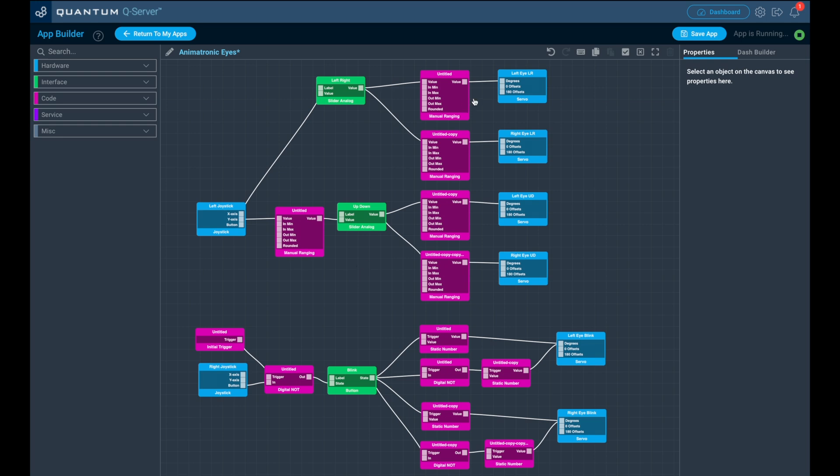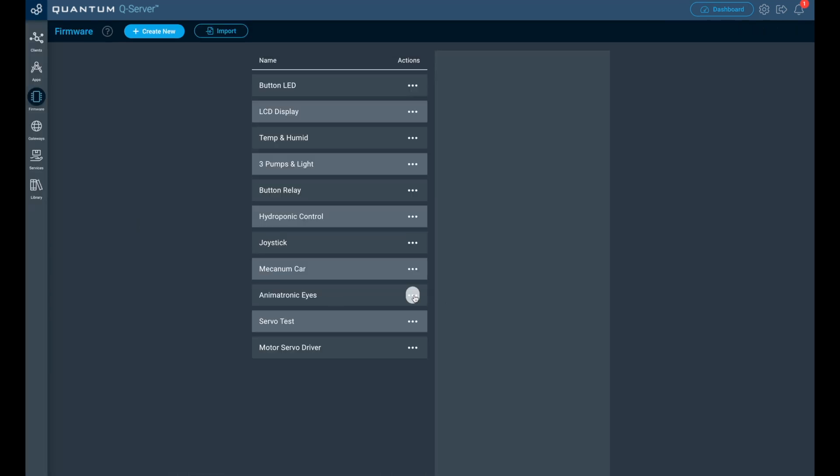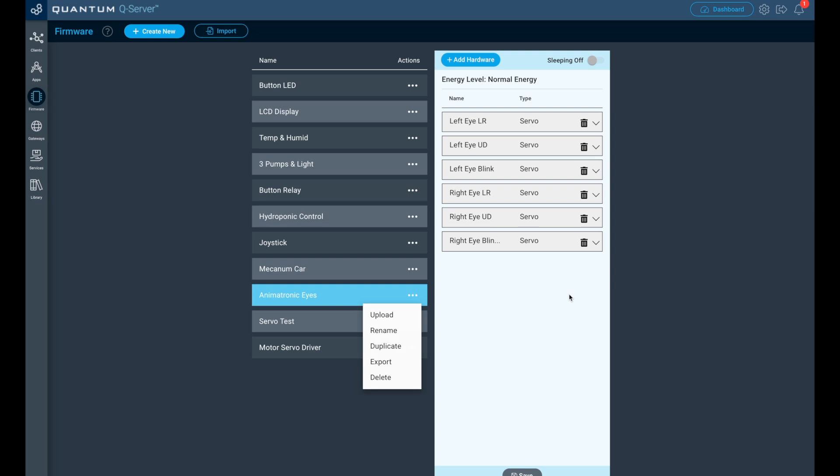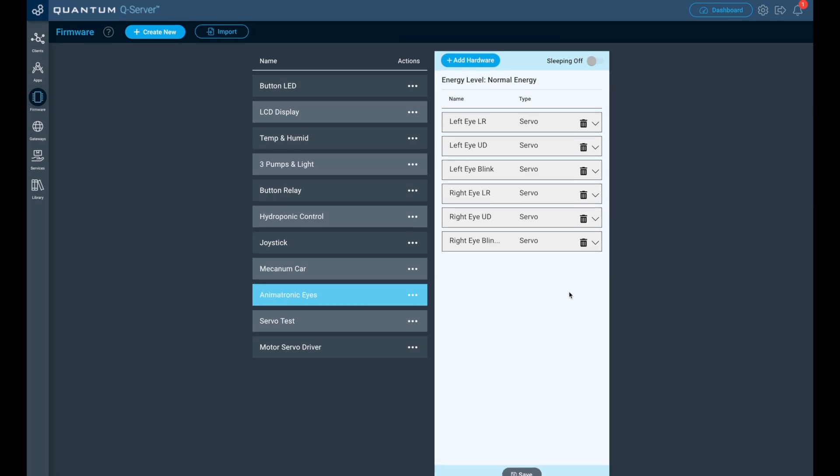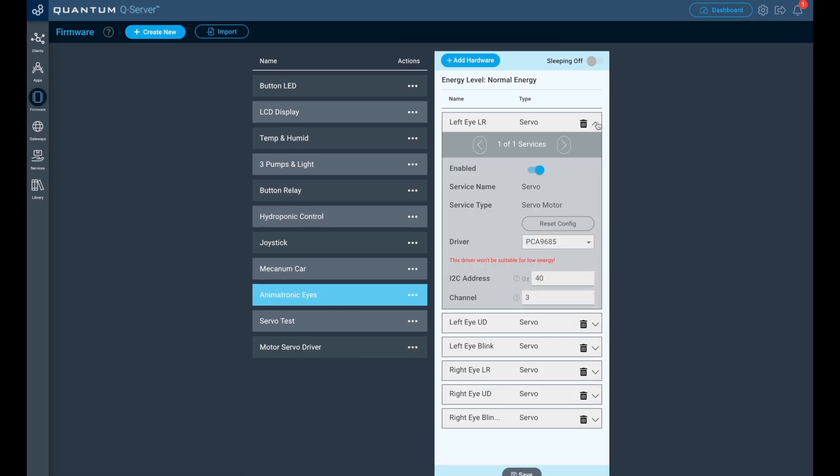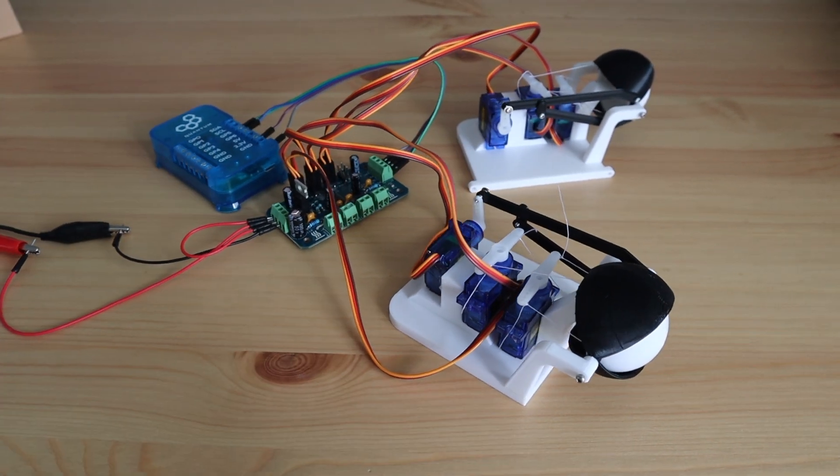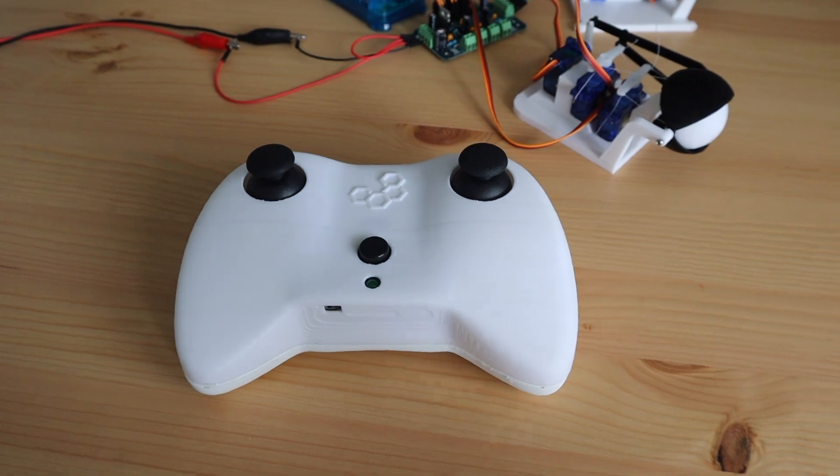These then feed into some ranging blocks which set the directions and travel limits for the servos and then feed into each of the six servos on the right. So we have the left and right movement at the top, the up and down movement in the middle and the blinking servo at the bottom. Lastly, before we run the app we need to create our builder base firmware to tell the builder base which servo is connected to which driver output. I've started off by only enabling a single eye to test it so let's see if that works.